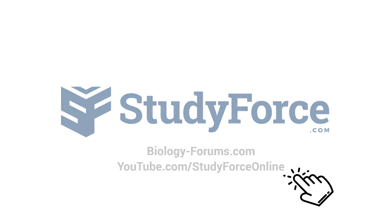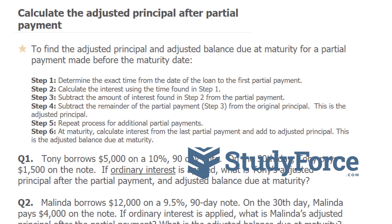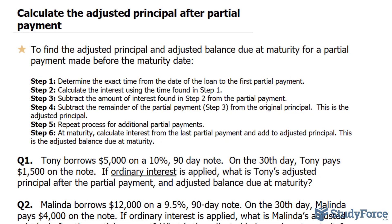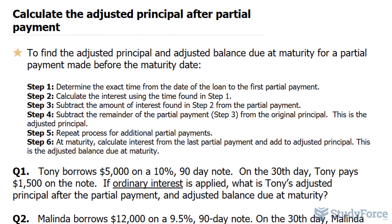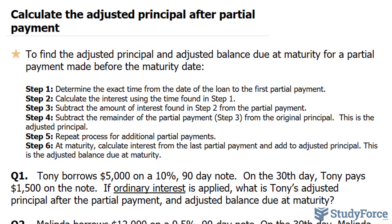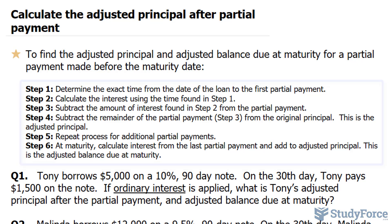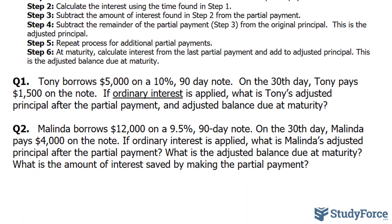In this quick tutorial, I'll show you how to calculate the adjusted principal after partial payment. To find the adjusted principal and adjusted balance due at maturity for a partial payment made before the maturity date, the following six steps need to be followed. We'll be following these steps in two questions that I've prepared.